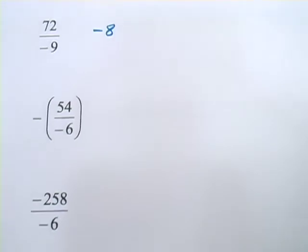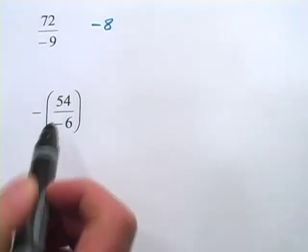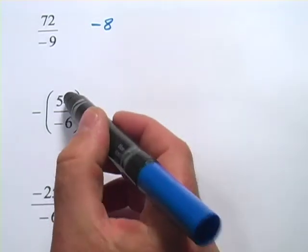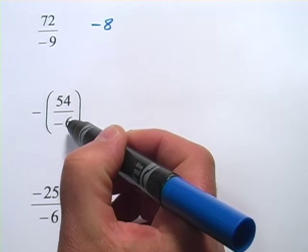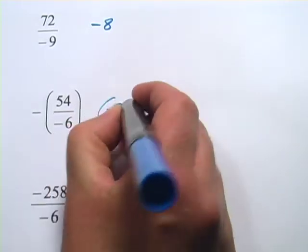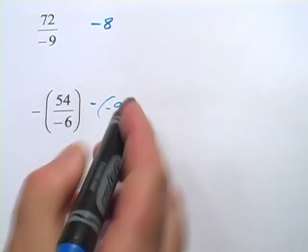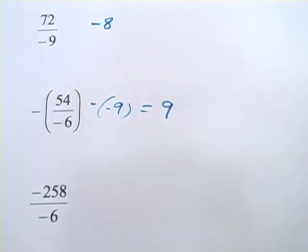This next problem down here, you can see there's one, two negative signs, so the answer should be positive. Let's see what happens here. We have 54 divided by a negative 6. That is negative 9, but we have this negative sign outside the parentheses, so a negative negative 9 equals a positive 9. So the answer is indeed positive.